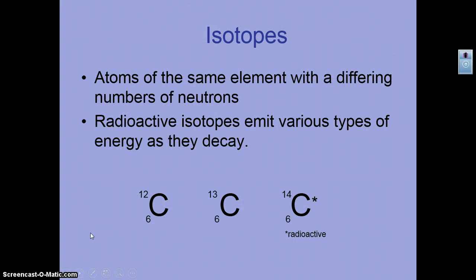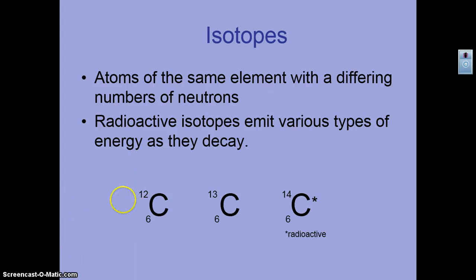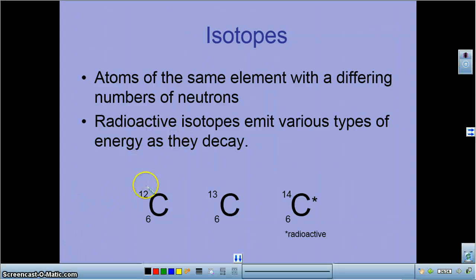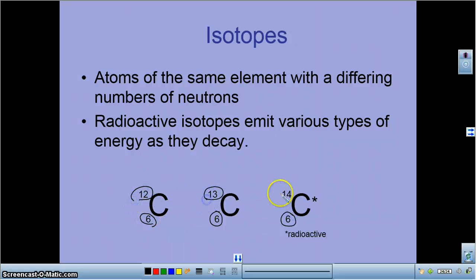Isotopes, by definition, are the same element with the same number of protons, but the only difference is the number of neutrons. For example, carbon's identity is 6 protons, but the mass number is different across isotopes: carbon-12 has 6 neutrons, carbon-13 has 7 neutrons, and carbon-14 has 8 neutrons in the nucleus.